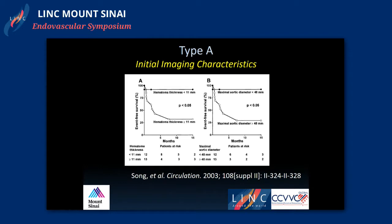Song et al. looked at type A intramural hematomas and sought imaging characteristics to predict mortality. Hematoma thickness greater than 11 millimeters and maximum aortic diameter at diagnosis greater than 48 millimeters were highly relevant to event-free survival.